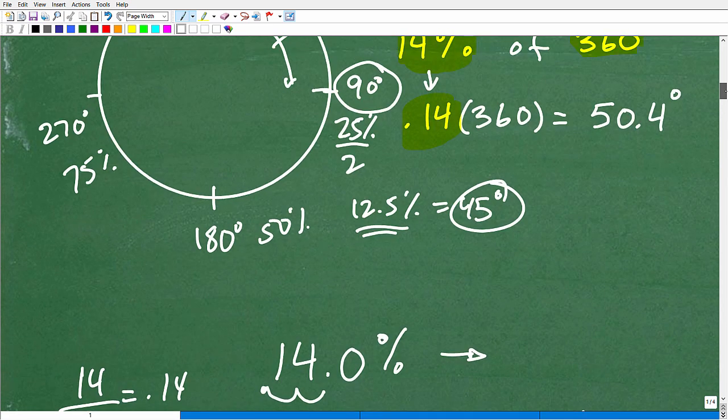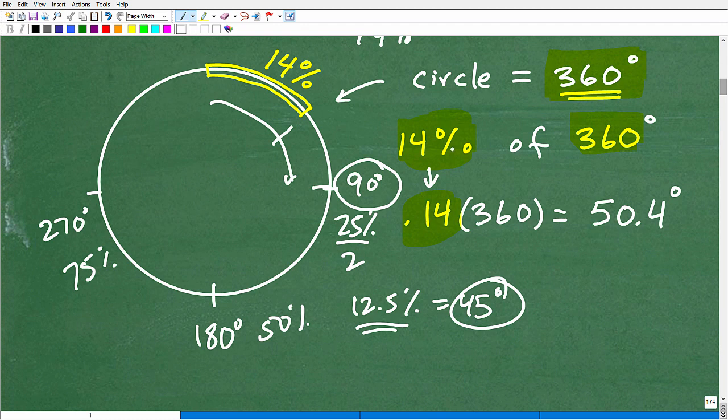But what you have to do first to find a percent of a number is you find that you take that percent and you write it as a decimal. So in this case, again, 14% is 0.14, and then just multiply by our number that we want to find the particular percent of. So that's 0.14 times 360, and we get 50.4, but 50.4 what? Degrees. And that is the answer, okay?